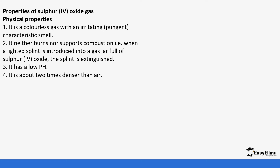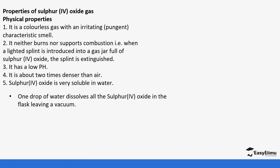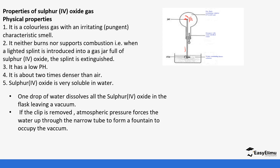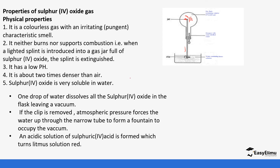Sulfur dioxide is two times denser than air, which is the reason why we collect it by downward delivery. It is very soluble in water — if you put one drop of water into sulfur dioxide, it dissolves to leave a vacuum. Because of the atmospheric pressure, water is pushed upward through the tube and comes out like a fountain. This is the same experiment we saw with ammonia — the water rises to occupy the vacuum left.